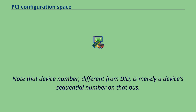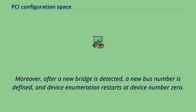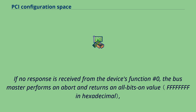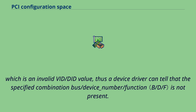Note that device number, different from DID, is merely a device's sequential number on that bus. After a new bridge is detected, a new bus number is defined, and device enumeration restarts at device number 0. If no response is received from the device's function number 0, the bus master performs an abort and returns an all-bits-on value, which is an invalid VID/DID value. Thus a device driver can tell that the specified bus/device_number/function combination is not present.